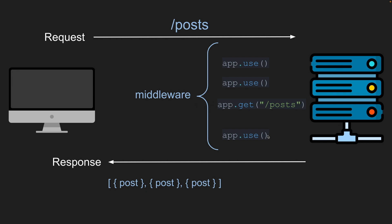In the controllers you typically send the response and Express would no longer continue in the stack. But if we don't send a response and we throw an error, Express will finish running the handler, throw the error, and then move down to the next piece of middleware where we can catch the error, do some processing, and return a response.